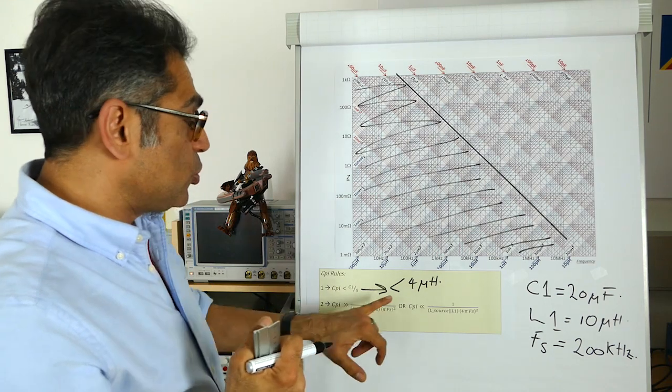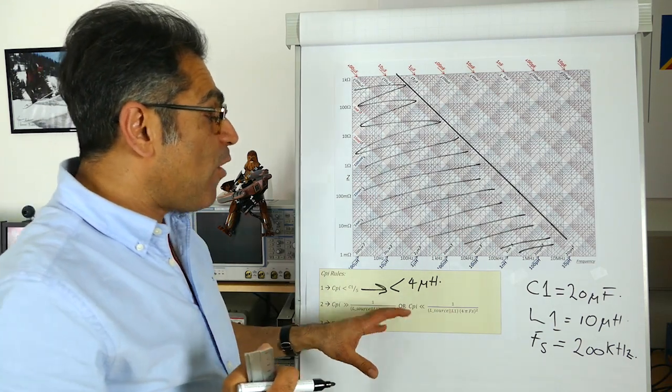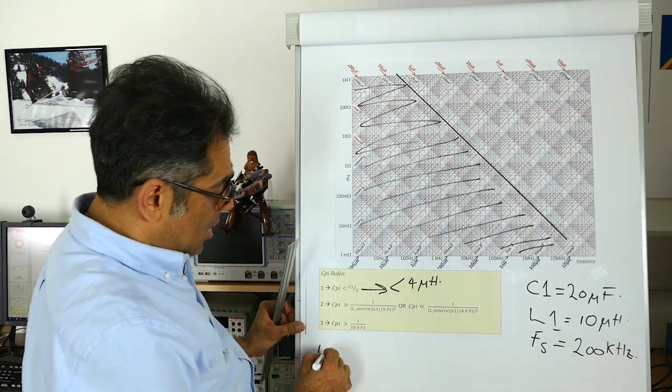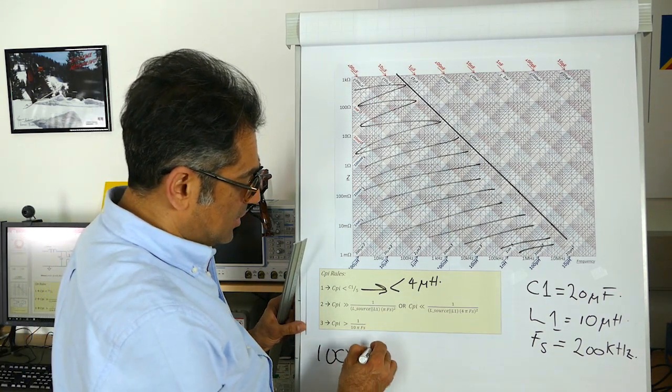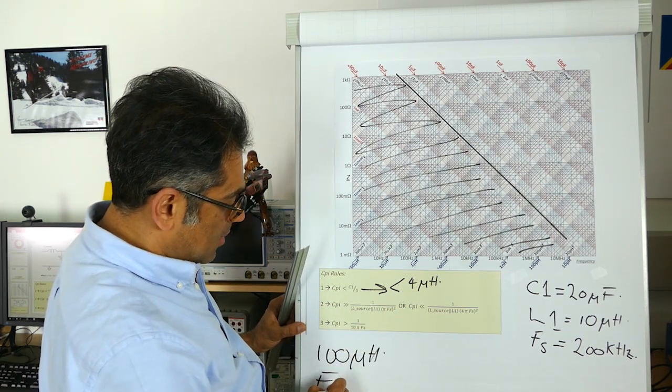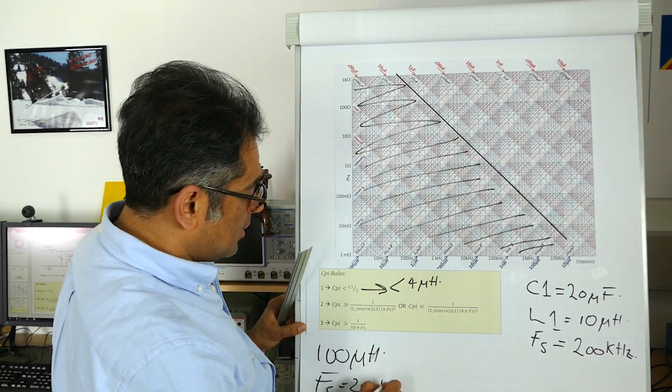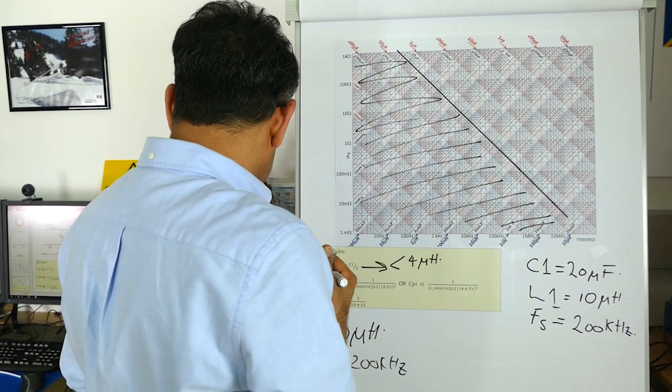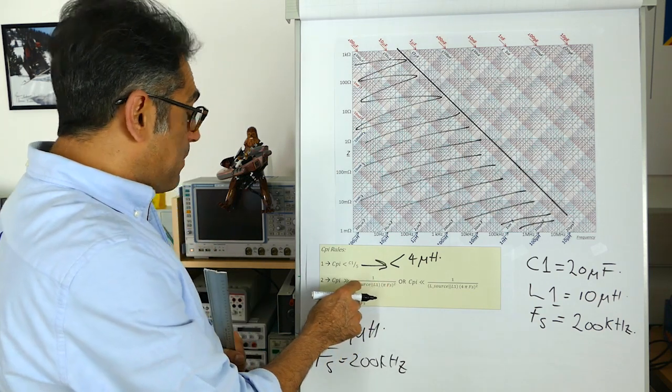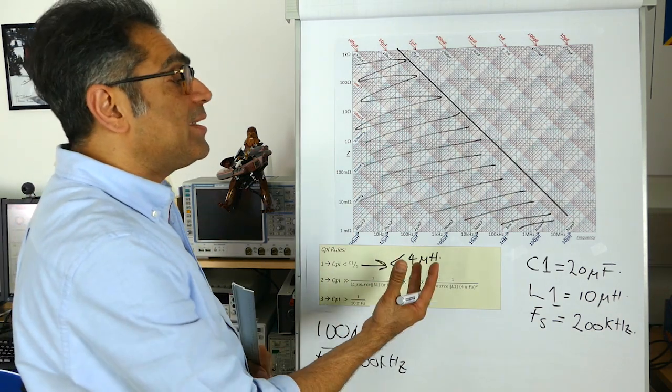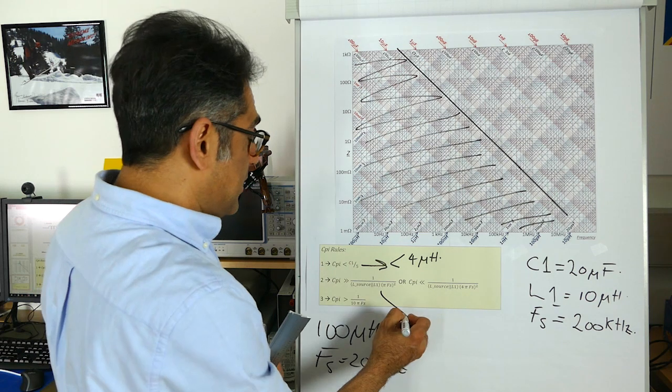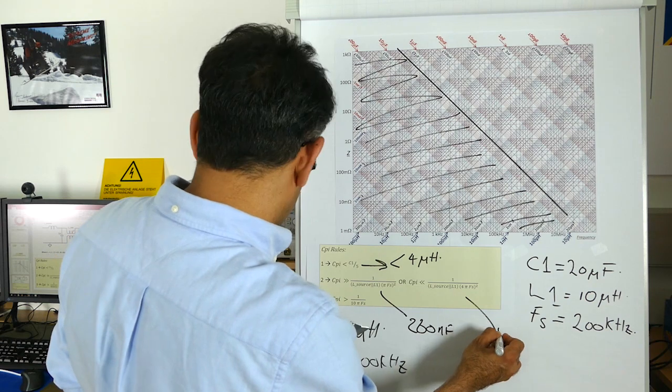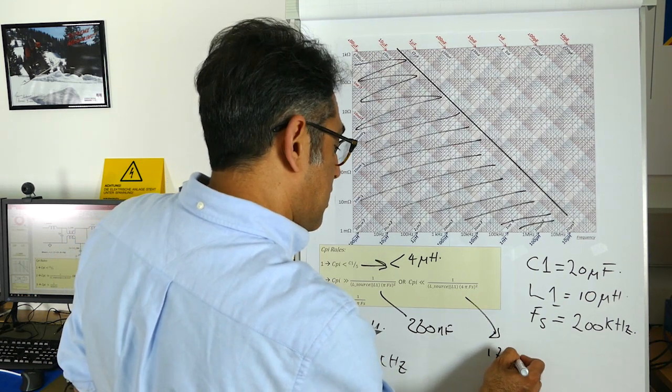Then rule two gives me how far away from the resonance I have to be dependent on L source, which I said was 100 microhenries. That was L source. Switching frequency in my case was 200 kilohertz and L1 is 10 microhenries. And these two equations give me the Cpi that has to be either bigger than 280 nanofarads, bigger than 280 nanofarads, or smaller than 17 nanofarads.